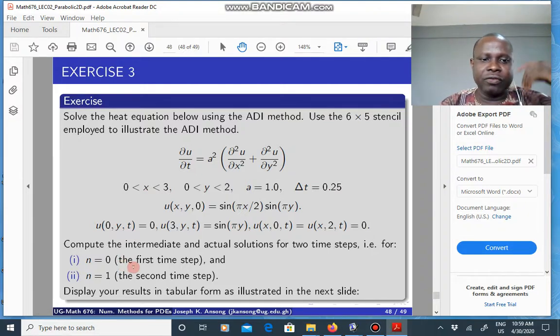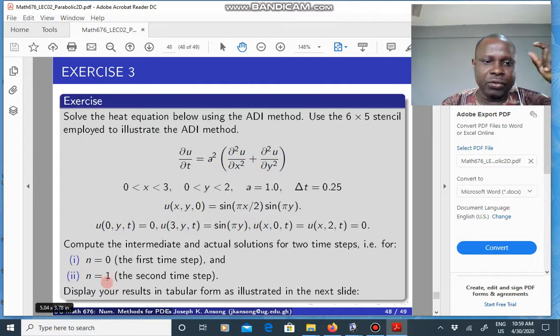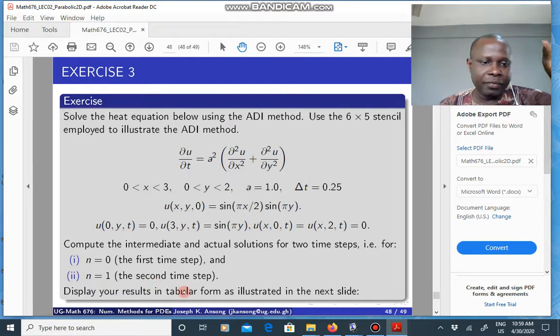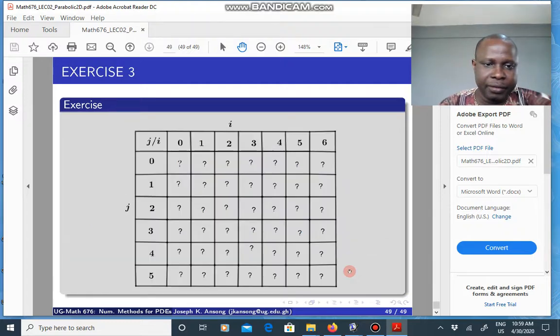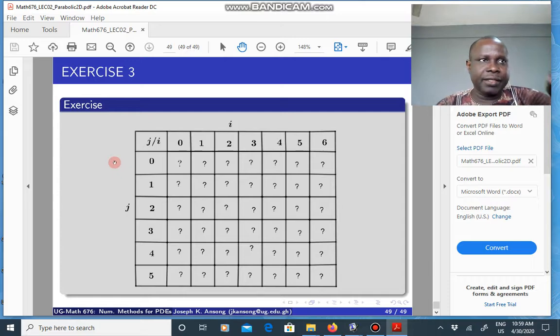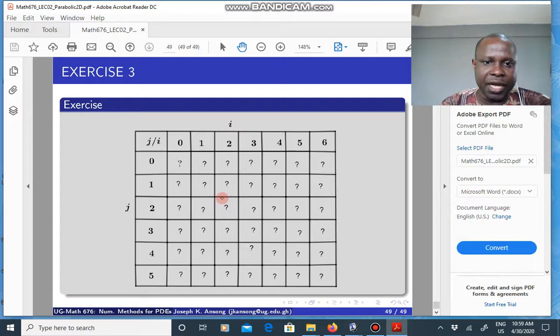When you move on to the next stage, you are going to put n equals 1, and that will also give you an intermediate step solution u tilde as well as the final solution for when n is 1. And I actually want you to display your results in a tabular form like this. For each case, for when n is 0, you will get the u tilde, and then you need to fill a table like this for the u tilde. And then in the next step, you are going to have the final u, and then you have to fill a table like this.